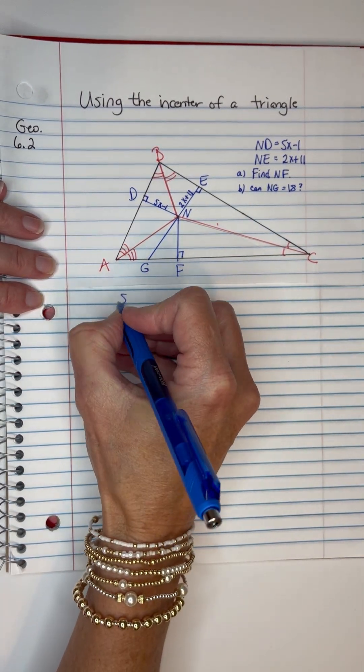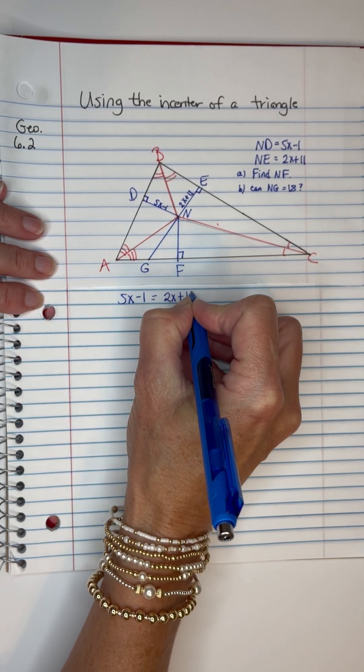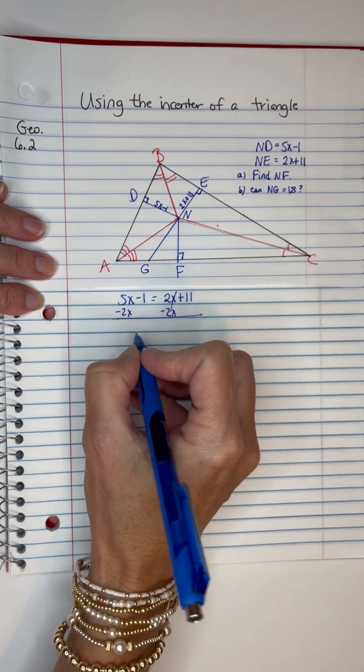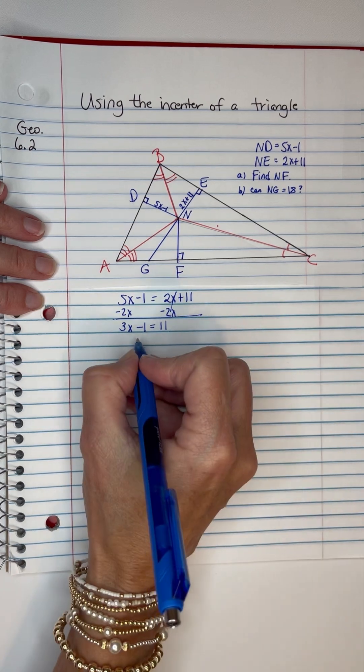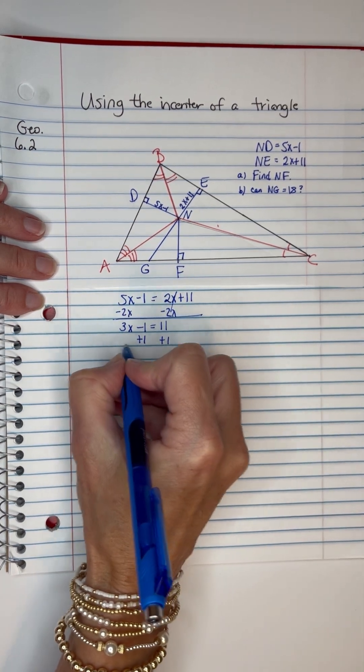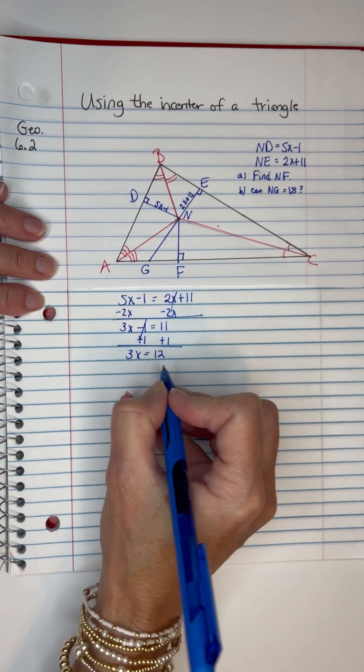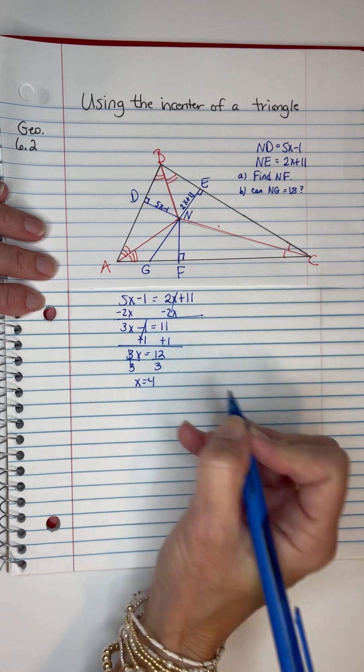So 5X minus 1 equals 2X plus 11. I will subtract 2X from both sides because I need the X's on the same side. I have 3X minus 1 equals 11. I will add 1 to both sides. And 3X equals 12. I will divide by 3 and get X equals 4.